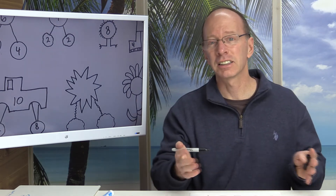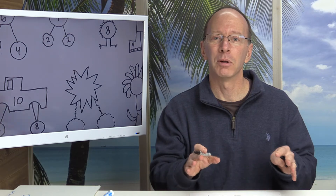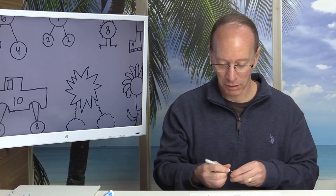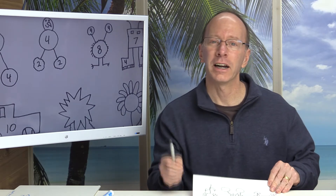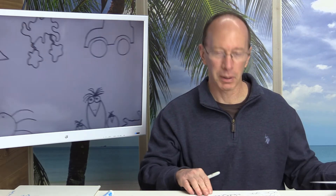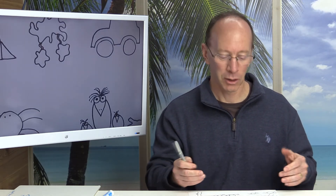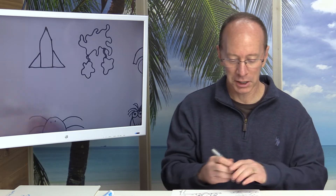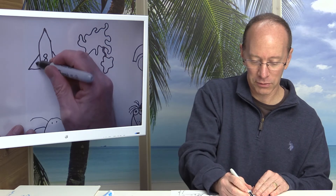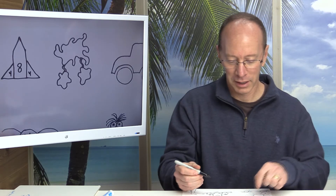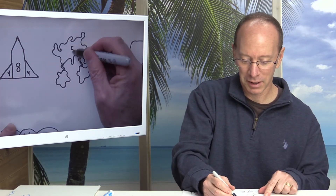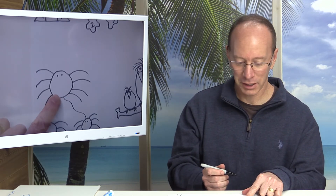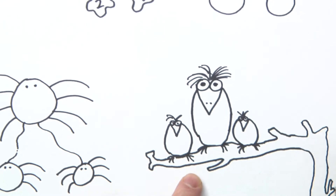One idea is to have the kids come up with their own number bond pattern and then they can fill in the numbers. It's a great creative way to inspire our kids to want to do these number bonds. You can see I have a spaceship right there — you can have an eight here and a four here and a four here. This blob, these spiders right over here, and a pair of birds.